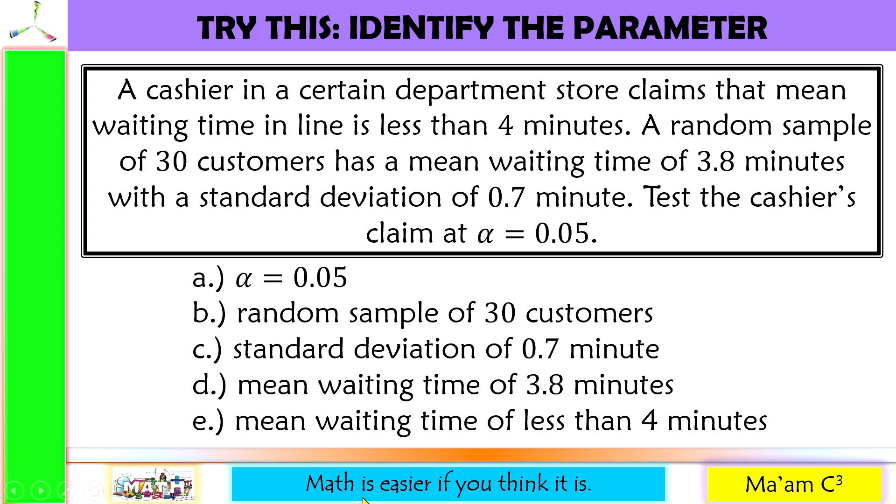Last one, a cashier in a certain department store claims that mean waiting time in line is less than four minutes. A random sample of 30 customers has a mean waiting time of 3.8 minutes with a standard deviation of 0.7 minutes. Test the cashier's claim at alpha equals 0.05.